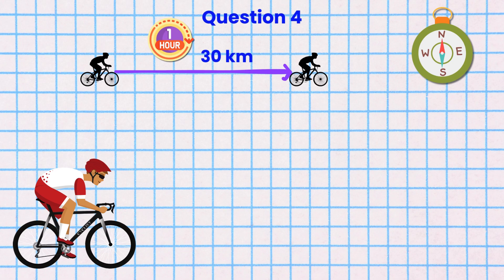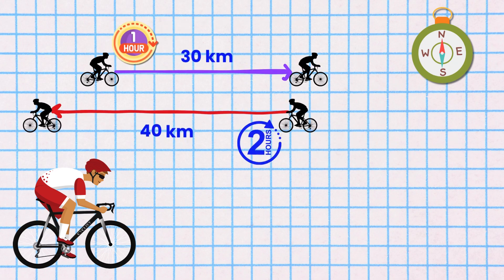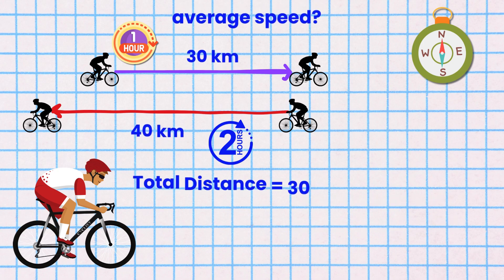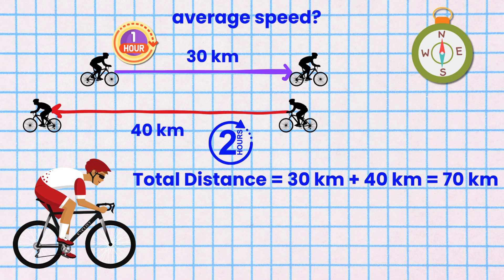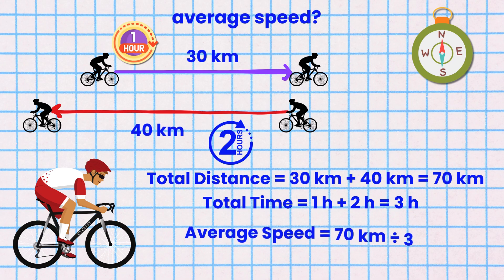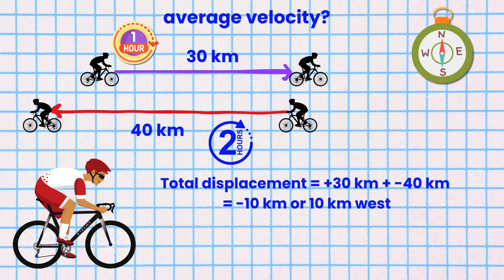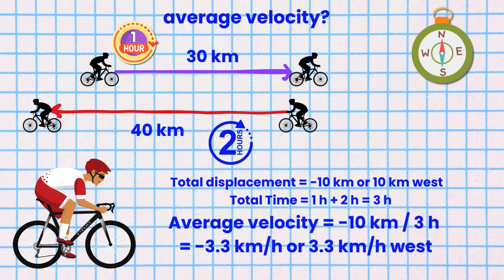Question 4. Albert bikes 30 kilometers east in 1 hour, then turns west and travels another 40 kilometers in 2 hours. What is Albert's average speed and average velocity for the entire journey? Total distance is 30 kilometers plus 40 kilometers, which is 70 kilometers. Total time is 3 hours. Average speed is 70 kilometers divided by 3 hours, which equals 23.3 kilometers per hour. Total displacement is plus 30 kilometers plus negative 40 kilometers, which equals negative 10 kilometers, or 10 kilometers west. Average velocity equals negative 10 kilometers divided by 3 hours, which equals negative 3.3 kilometers per hour, or 3.3 kilometers per hour west.